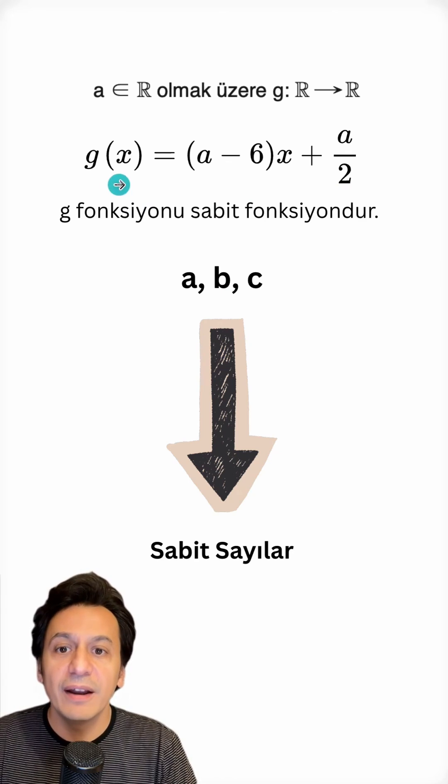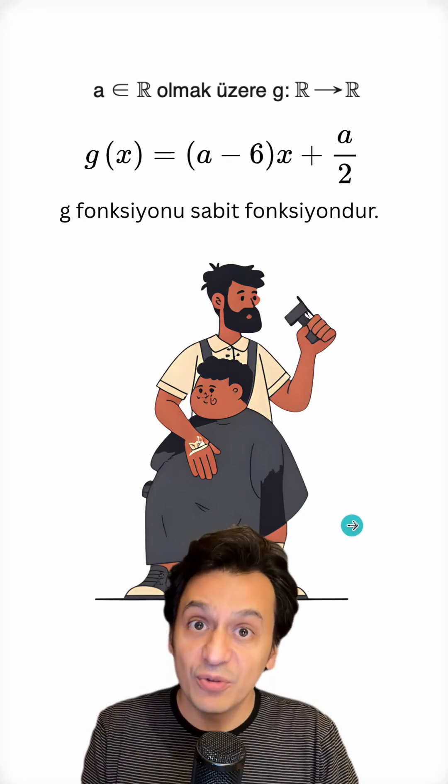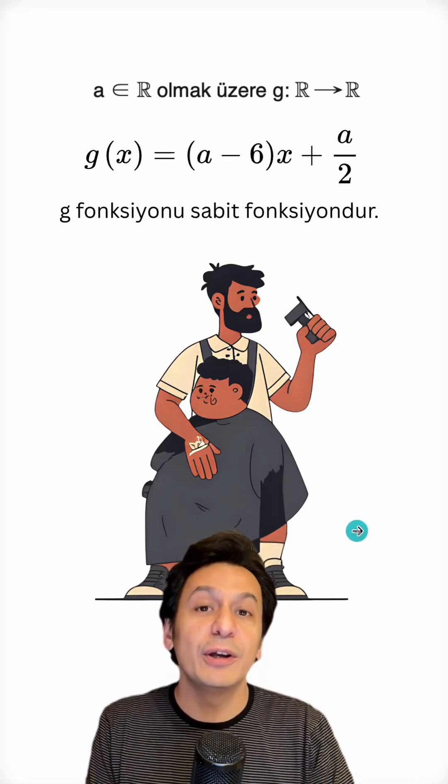Therefore, in this example as well, X represents the variable and A represents the constant numbers here. This is about a so-called constant function. What is a constant function?